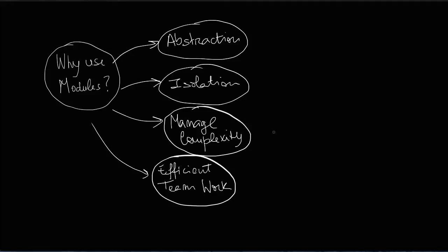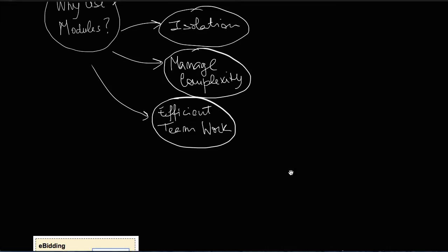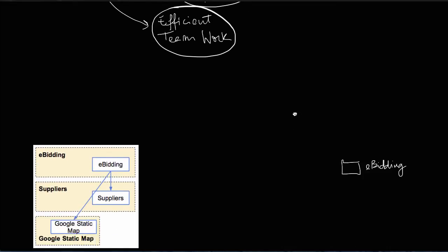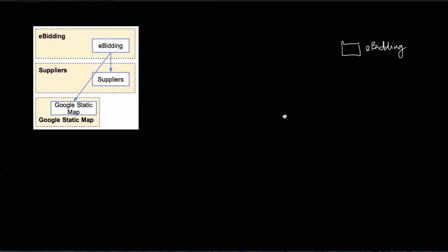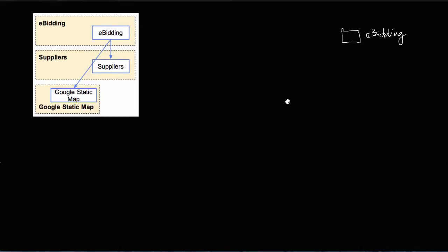Let's try to understand what happens when we create a reference, and let's use our eBeating application as an example. You'll recall from the previous lessons that we referenced the suppliers module from the eBeating module, and also the Google static map module.